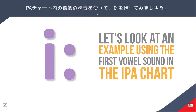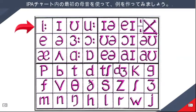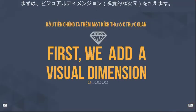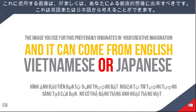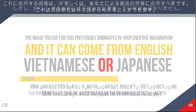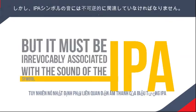Let's look at an example using the first vowel sound in the IPA chart. First, we add a visual dimension. The image you use for this preferably originates in your creative imagination, and it can come from English, Vietnamese, or Japanese. However, it must be irrevocably associated with the sound of the IPA symbol.